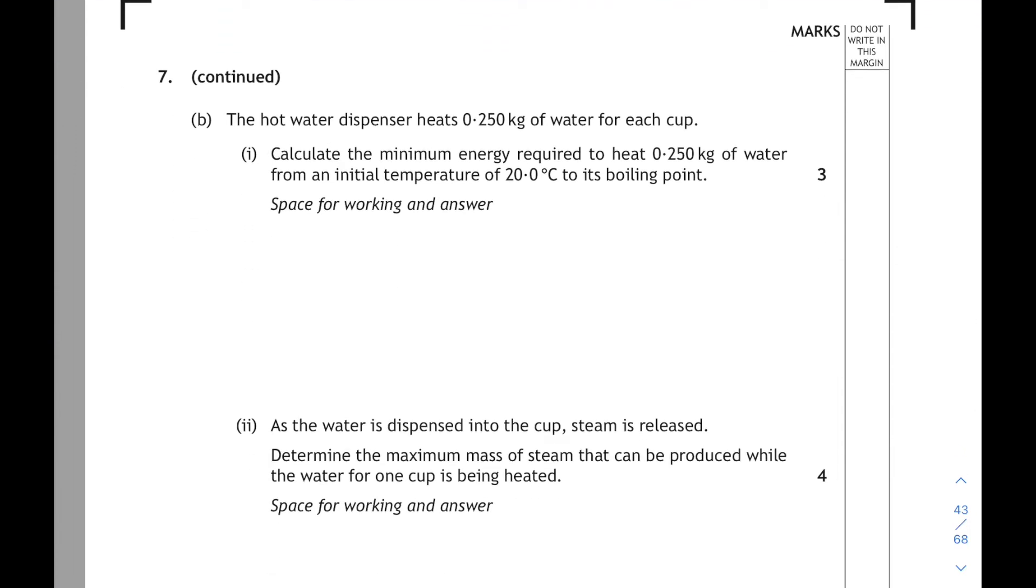Then the hot water dispenser heats 0.25 kilograms of water for each cup. Calculate the minimum energy required to heat 0.25 kilograms of water from an initial temperature of 20 degrees to its boiling point. This is a heat energy equation. E_h equals Cm delta T. You look up C on your datasheet for water. The specific heat capacity is 4180. There's the mass of the water and the change in temperature. Well, it's going from 20 up to 100 degrees. So the change in temperature is 80 degrees. And then, if you do all that on your calculator, then the heat energy required is 83,600 joules.